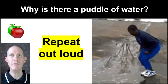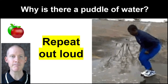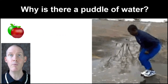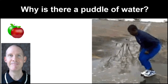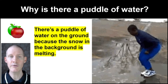Repeat out loud — here is pronunciation. Why is there a puddle of water? There's a puddle of water on the ground because the snow in the background is melting.